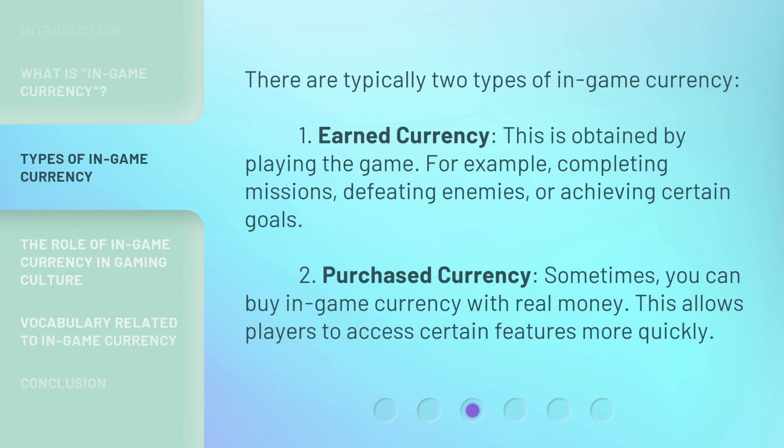There are typically two types of in-game currency. First, Earned Currency: this is obtained by playing the game — for example, completing missions, defeating enemies, or achieving certain goals. Second, Purchased Currency: sometimes you can buy in-game currency with real money, which allows players to access certain features more quickly.